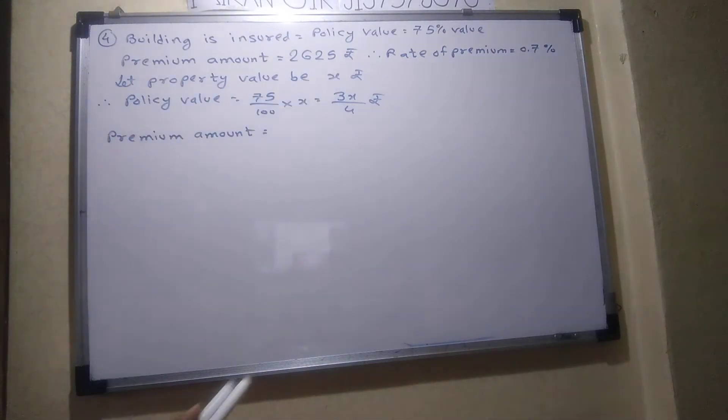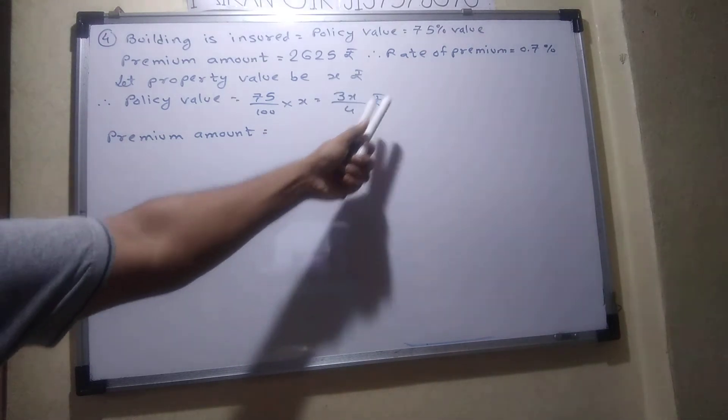The policy value is always given. What is given here? 75% of x, so 3x by 4 rupees.